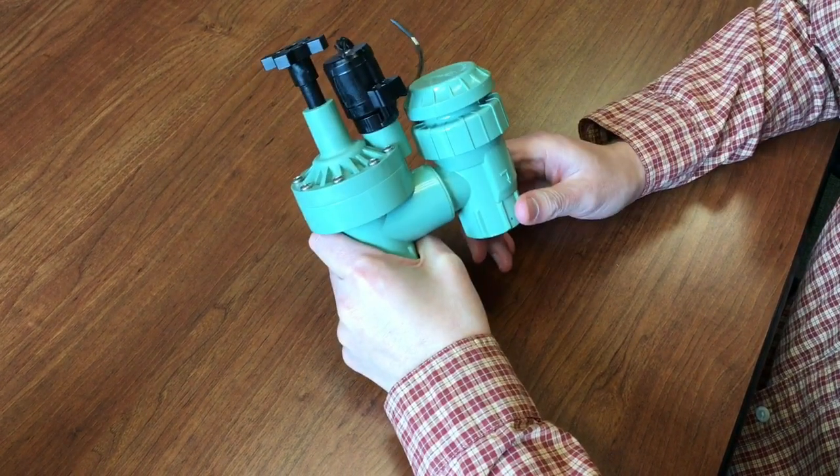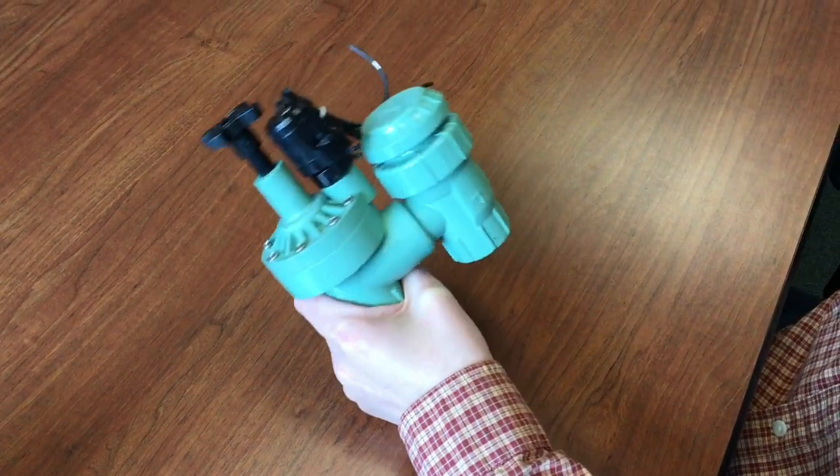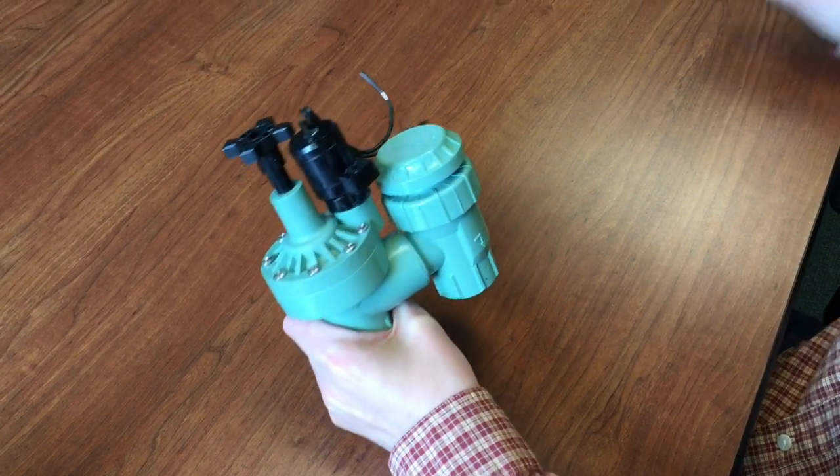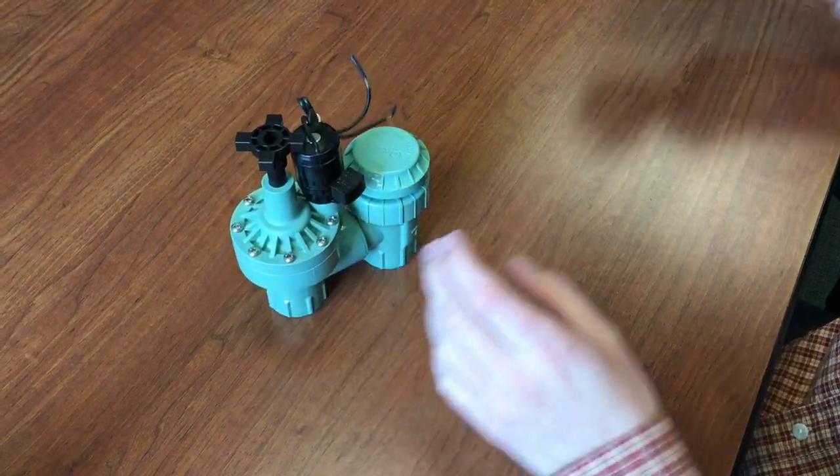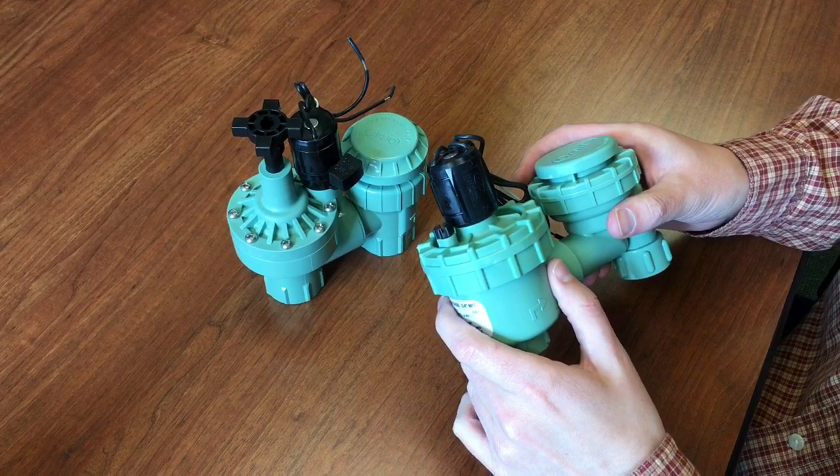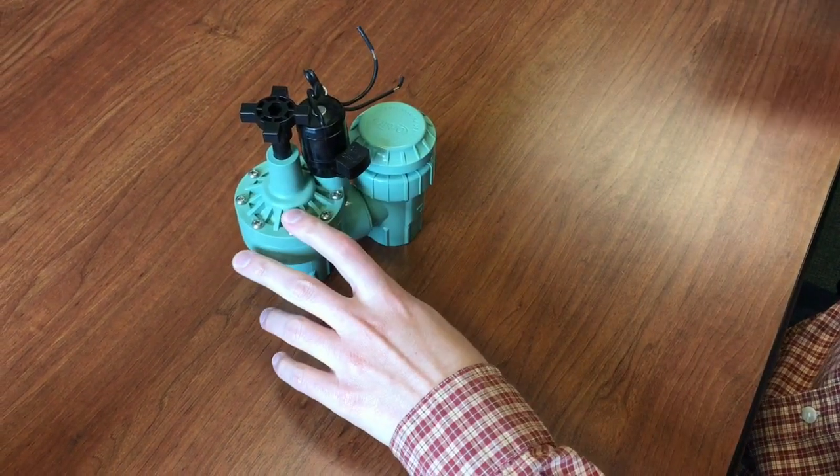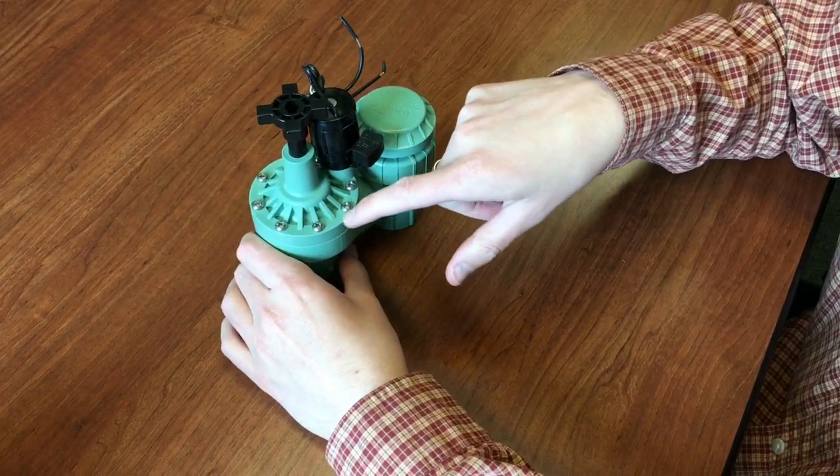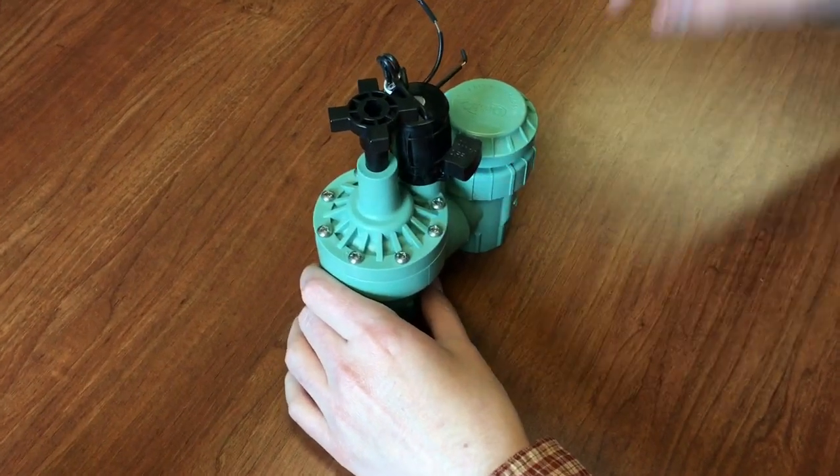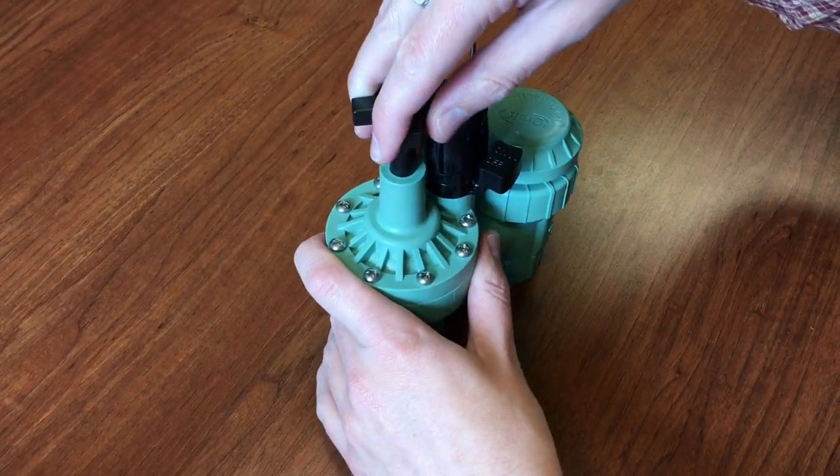Before we get started with that, let me just note that we sell two different types of anti-siphon valves. We sell this one I have here, and we also sell a jar top version. The videos we're doing today only apply to this version, which you'll recognize because it has screws in the valve and it has the flow control up here.